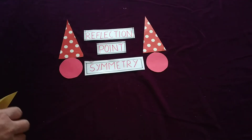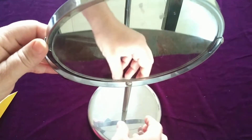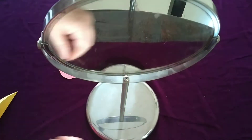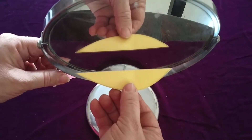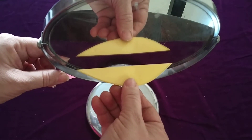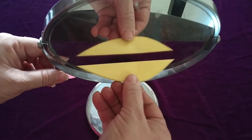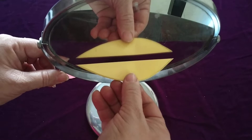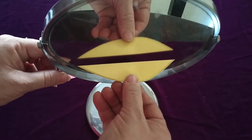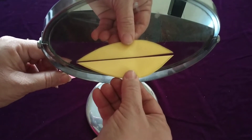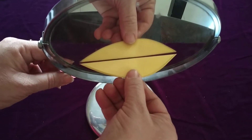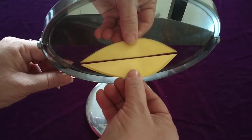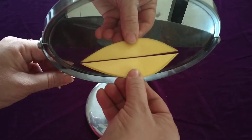Let us take an example. I am using a mirror here. Now you can see that if I keep just the half leaf in front of the mirror, you can see the reflection of this leaf in the mirror. This is called reflection symmetry, and if I touch the mirror, you can see the complete leaf — the mirror works as a line of symmetry. So this is also known as mirror symmetry.